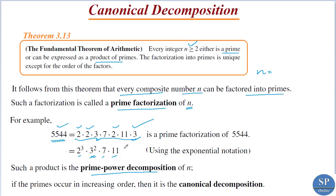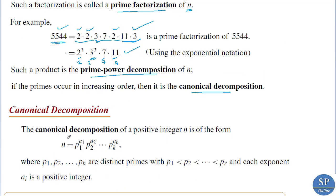Now if the primes 2, 3, 7, 11 are in increasing order, then such a factorization is called canonical decomposition. This is a canonical decomposition because 2 < 3 < 7 < 11. So we can define canonical decomposition: the canonical decomposition of a positive integer n is of the form n = p₁^a₁ · p₂^a₂ · … · pₖ^aₖ, where p₁ < p₂ < … < pₖ are distinct primes in increasing order and each exponent a₁, a₂, …, aₖ is a positive integer.